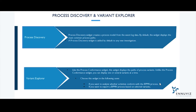What is Process Discovery? The Process Discovery widget creates a process model from the event log data. By default, the widget is added to any new investigation and displays the most common process path. The Variant Explorer, like the Process Conformance widget, displays the path of the process variant. Choose this widget if you want to analyze whether activities are confirmed with the BPMN process, or if you want to export a BPMN process based on the selected variants.